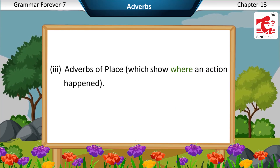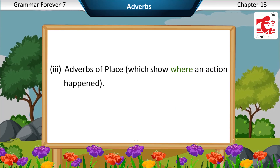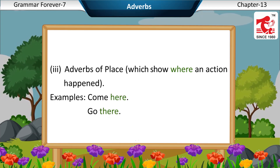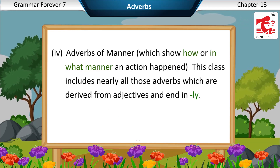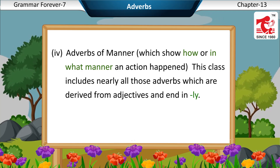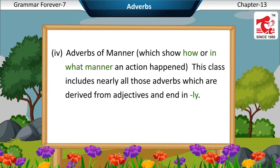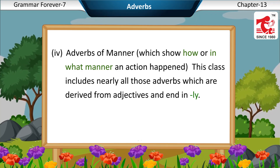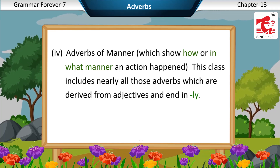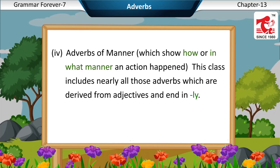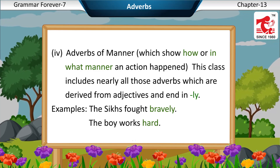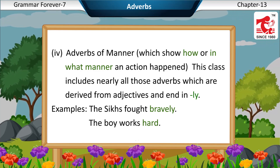3. Adverbs of place, which show where an action happened. Examples: Come here. Go there. 4. Adverbs of manner, which show how or in what manner an action happened. This class includes nearly all those adverbs which are derived from adjectives and end in -LY. Examples: The soldier fought bravely. The boy works hard.